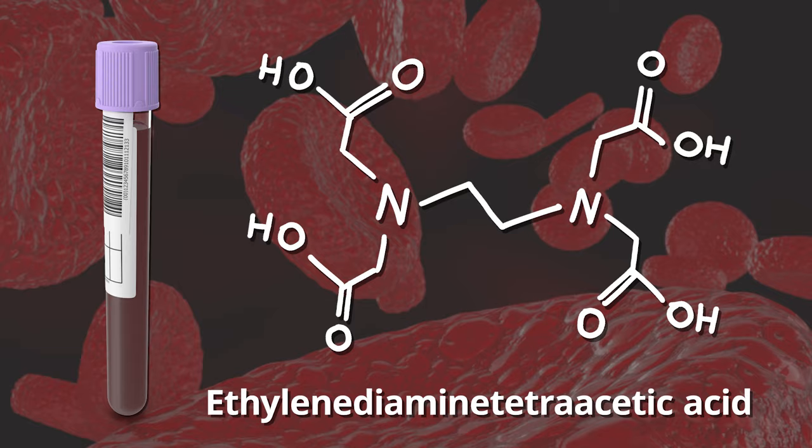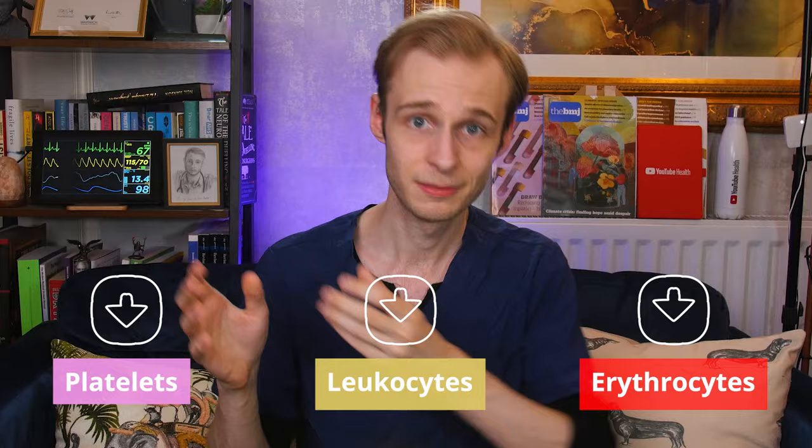Now that we understand the tube itself, we can think about some of the results our colleagues in the labs will send to us. Broadly speaking, we can divide this into three domains: red blood cells or erythrocytes, white blood cells or leukocytes, and platelets.